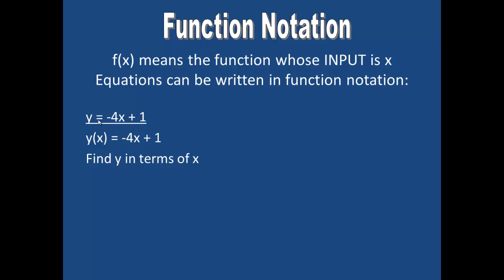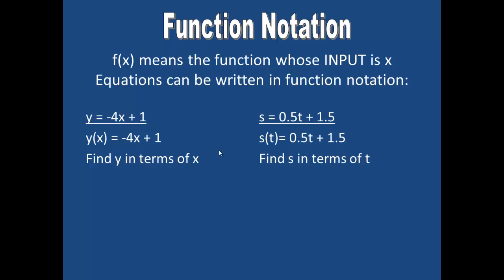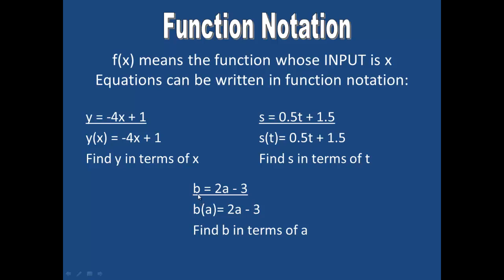In this notation, f of x means the function whose input is x. Equations can be written in function notation. We have been using equations like y equals negative 4x plus 1; we can replace the y with f of x, which simply means we are finding y in terms of x. An equation commonly used in science is s equals 0.5 times t plus 1.5, and we can rewrite this in function notation to indicate that we are finding s in terms of t. Similarly, b equals 2a minus 3 can be written as b of a equals 2a minus 3. So while we commonly use f to mean function, it is acceptable to use any letter of the alphabet.